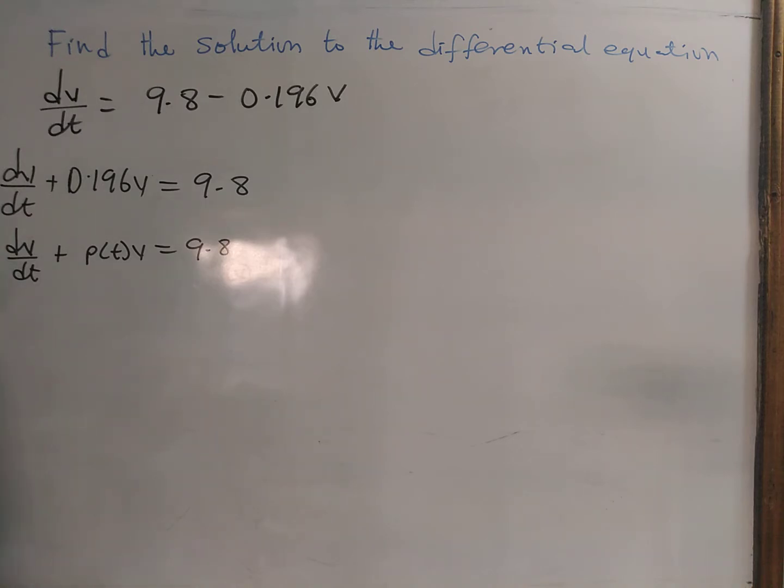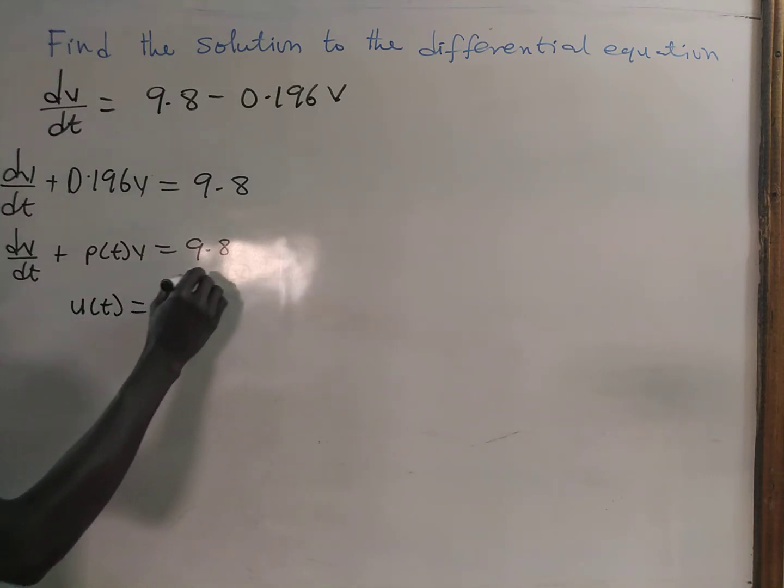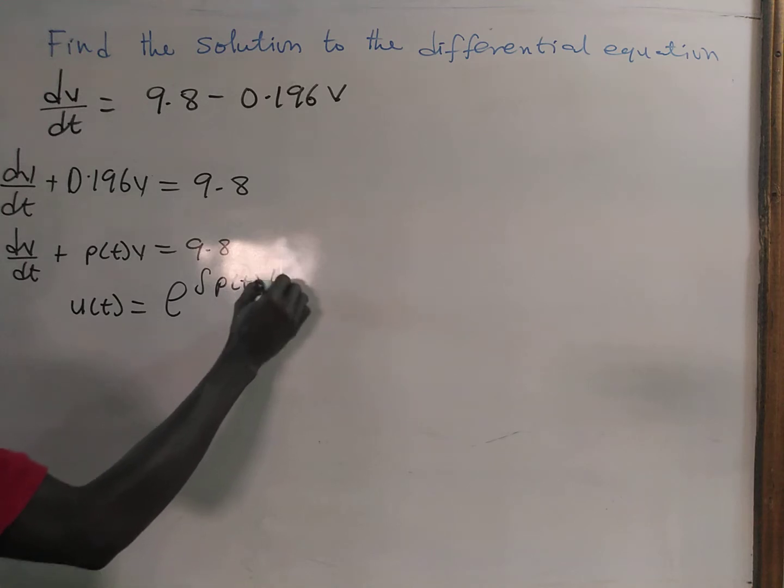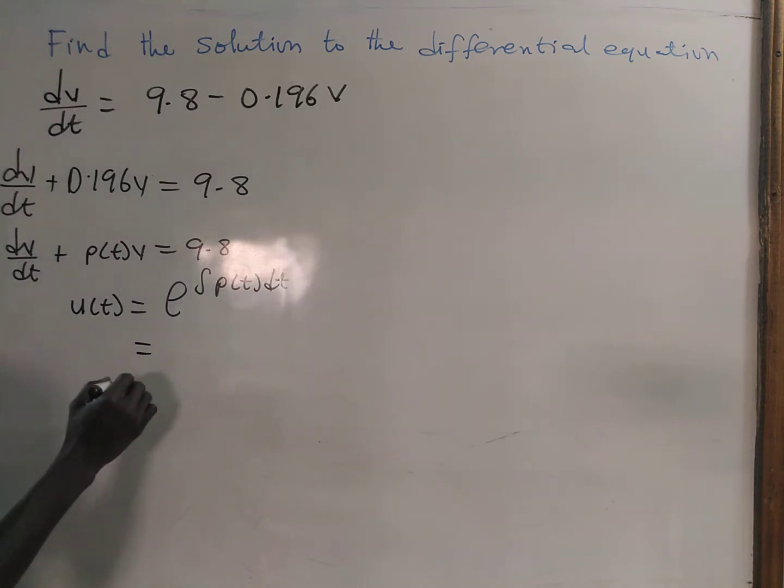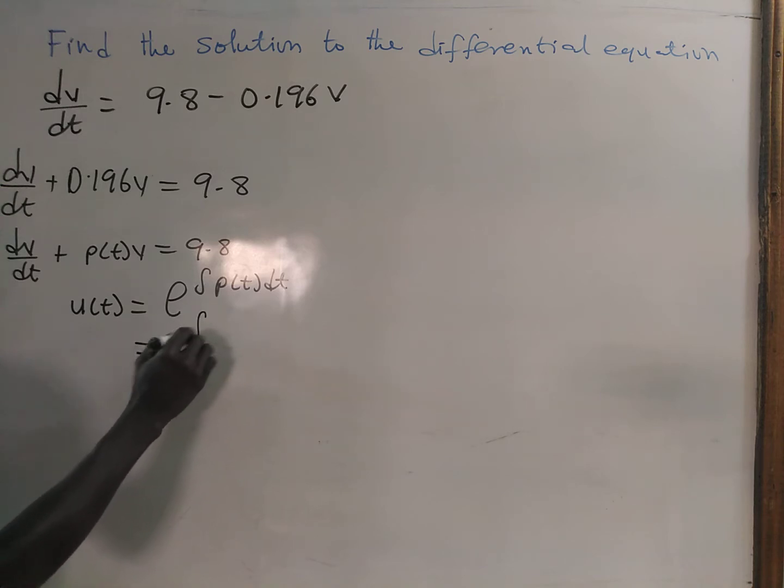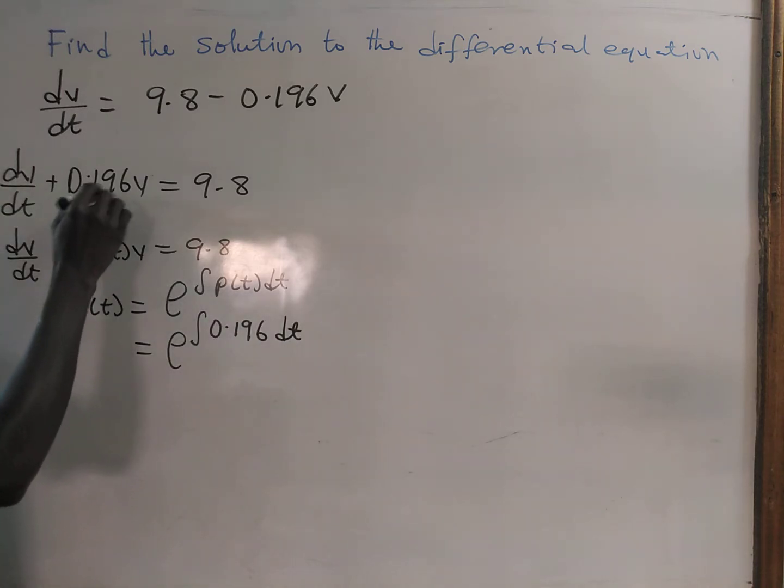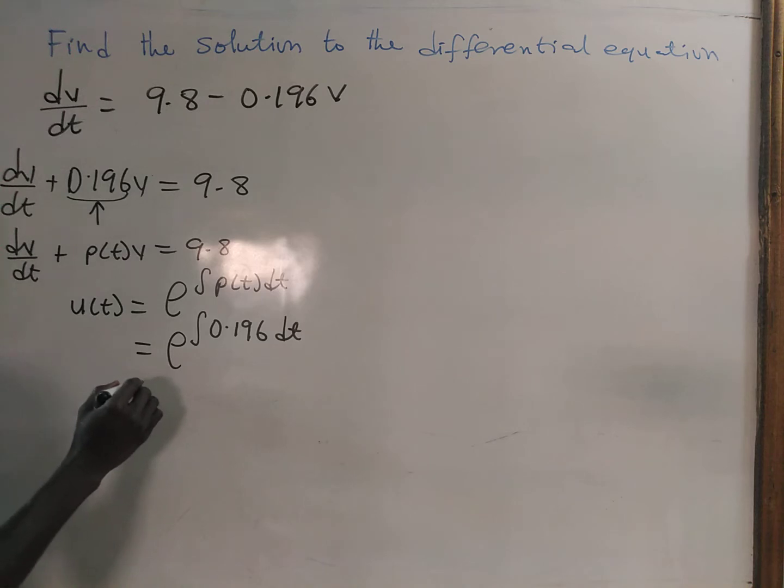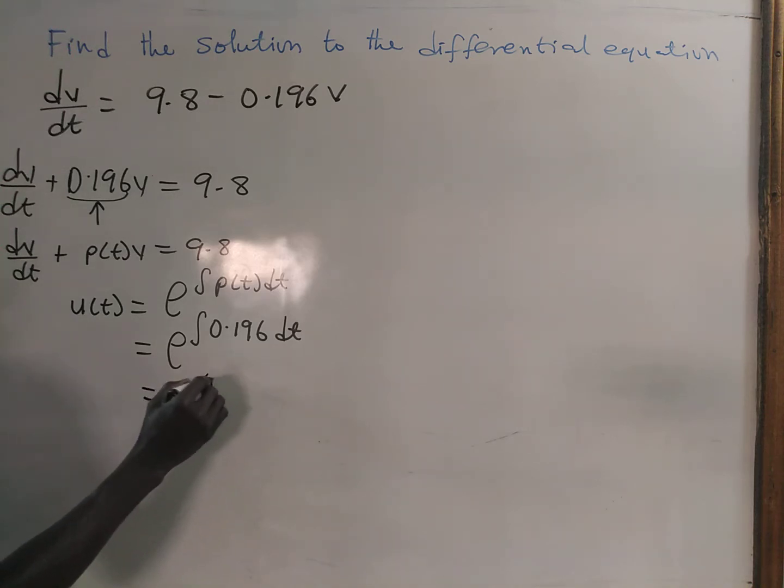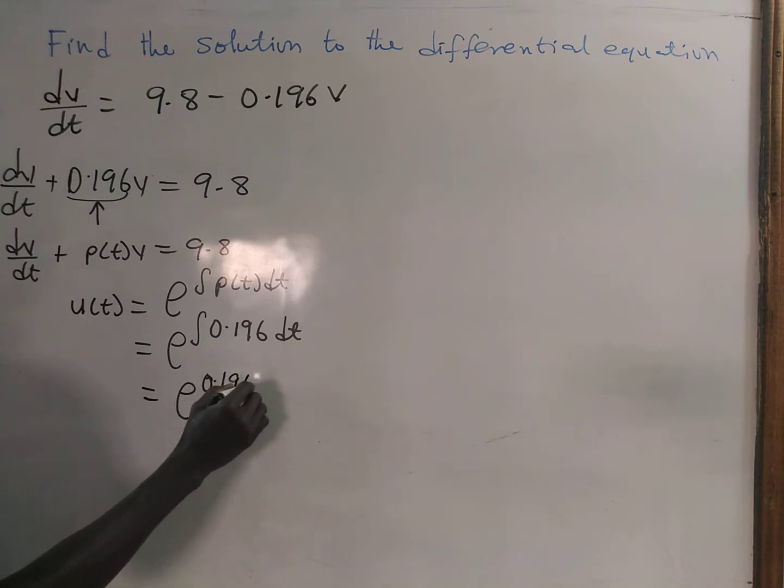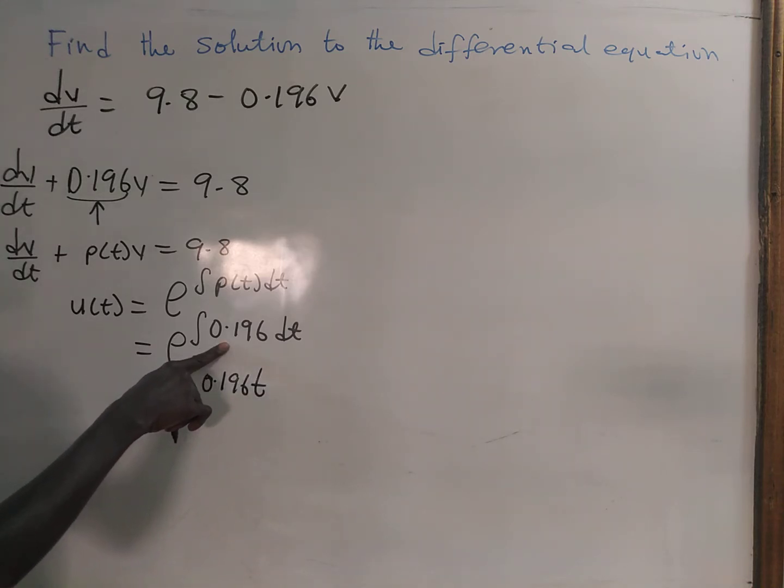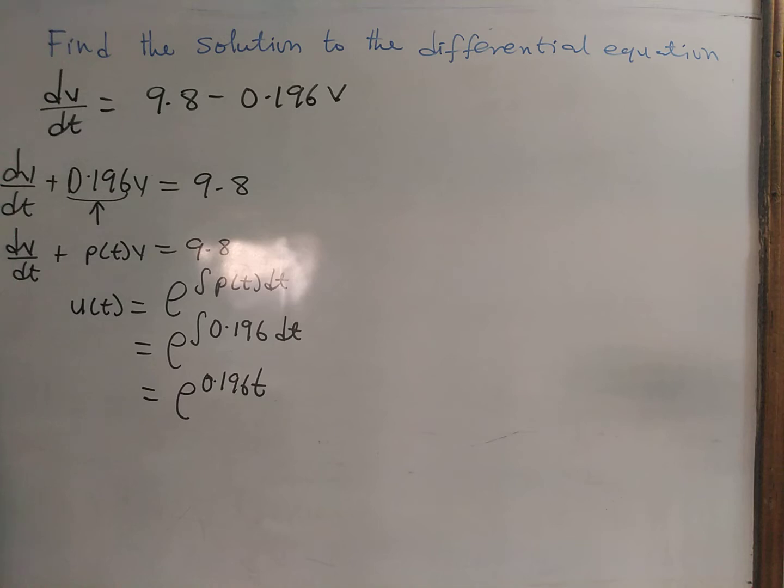So we take the integrating factor u(t) to be equal to e to the power the integral p(t)dt, which is equal to e to the power the integral 0.196 dt, which gives e to the power 0.196t. If you integrate 0.196 dt, you get 0.196t.